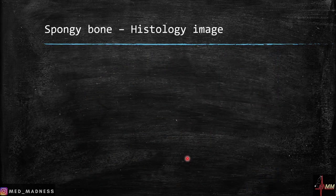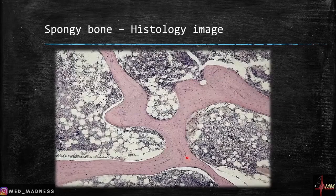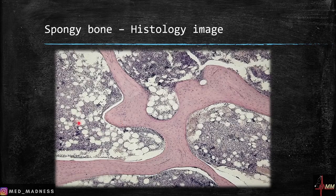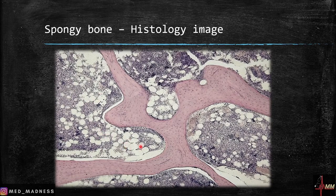In the spongy bone histology, here is the trabeculae containing lamellae with osteocytes in the lacunae. Enclosing the spaces between trabeculae is the bone marrow, which contains hematopoietic stem cells, many clear cells, and fat cells. As we age, these fat cells go on increasing.